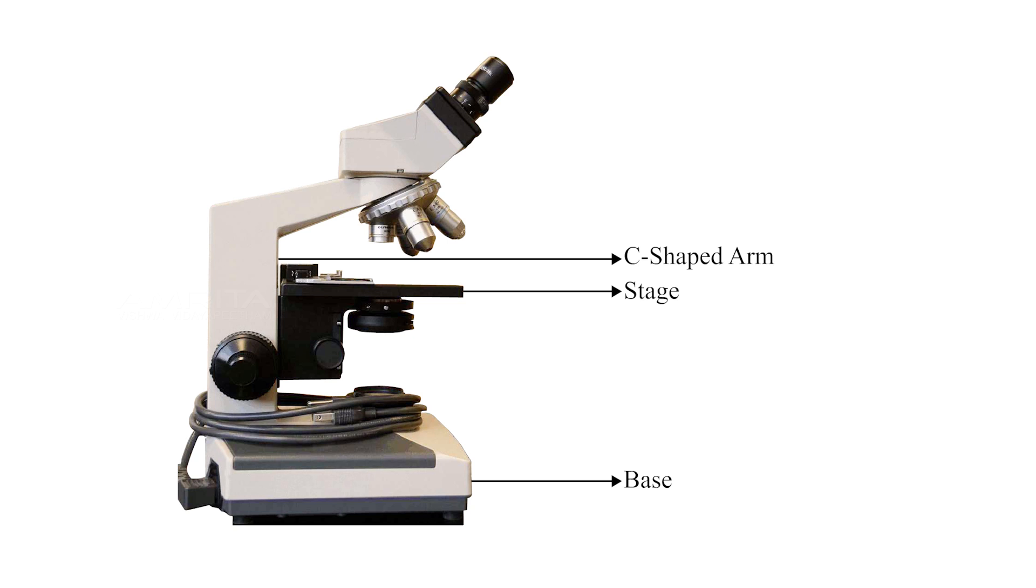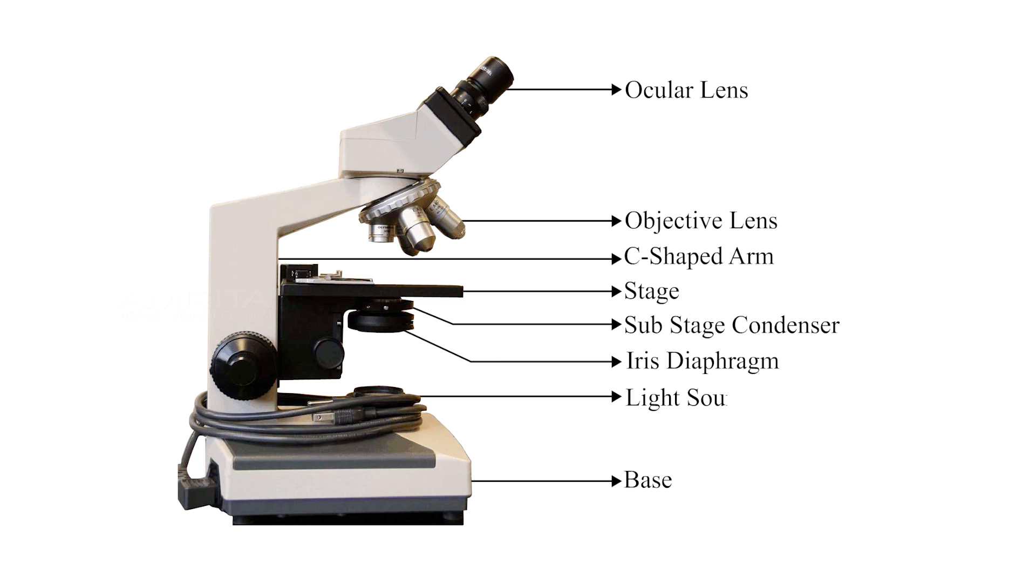The magnifying part consists of an objective lens and an ocular lens. And the illuminating part consists of a sub-stage condenser, iris diaphragm and light source.